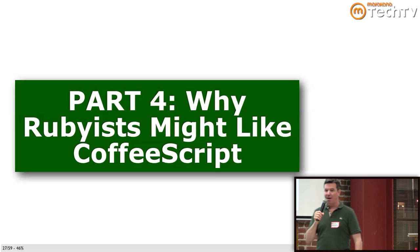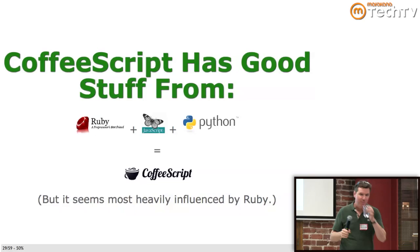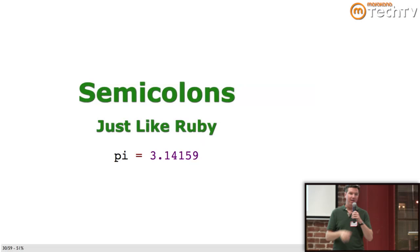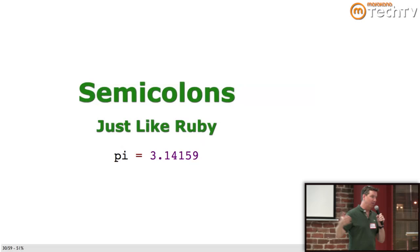Part four — the fun part — why Rubyists might like CoffeeScript. CoffeeScript has good stuff from Ruby, some good stuff from JavaScript, and some good stuff from Python. But from reading through the documentation, it seems to be most heavily influenced by Ruby. There's a lot in there that Rubyists would like. I'm just going to dive into these — one slide per topic.